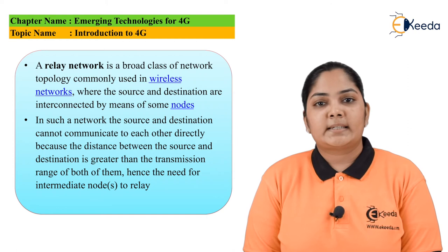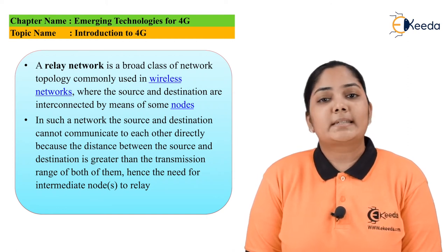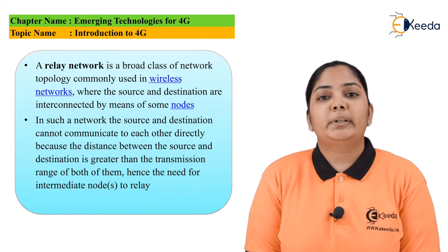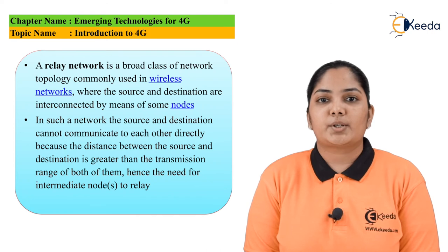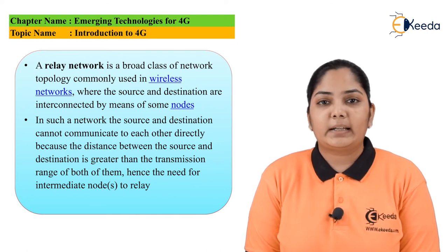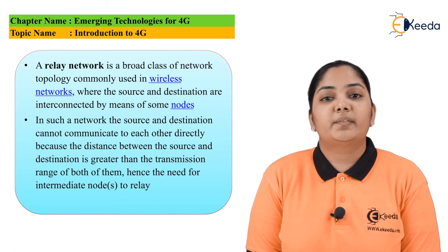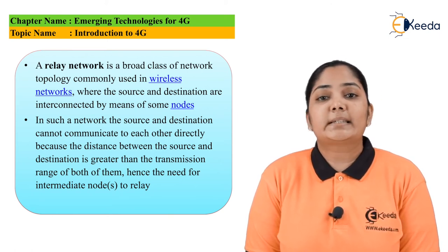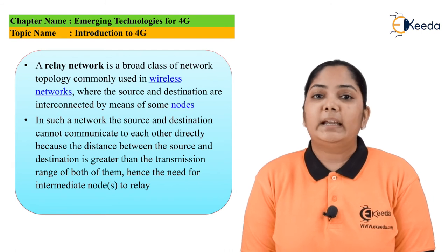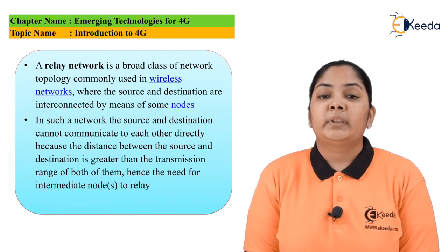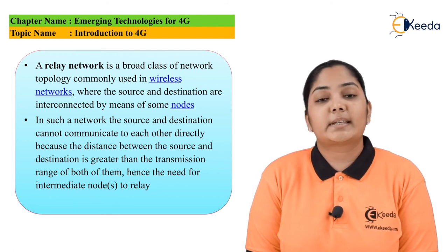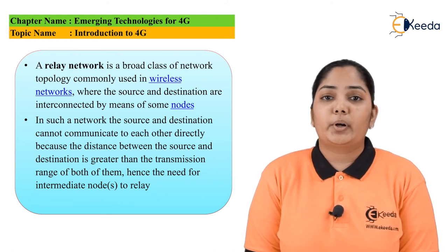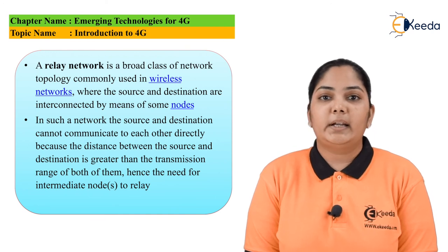For example, consider two devices that need to transmit information — say one is a server and the other is a computer. If the distance between the server and computer is extremely large, intermediate devices acting as nodes are required. The information from the server will first reach the first node, then gets relayed to multiple next nodes, and finally reaches the computer. This is an example of an internet service where relaying takes place since the distances among transmitters and receivers are extremely large. Relaying is thus an important ingredient of 4G systems.